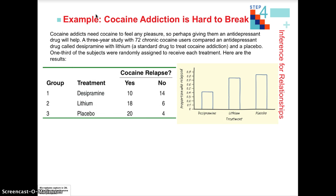We have another example, beginning on page 710 in your textbook. We have three different treatment options: desipramine, lithium, and a placebo for control. We're checking to see if patients had a relapse into cocaine usage.